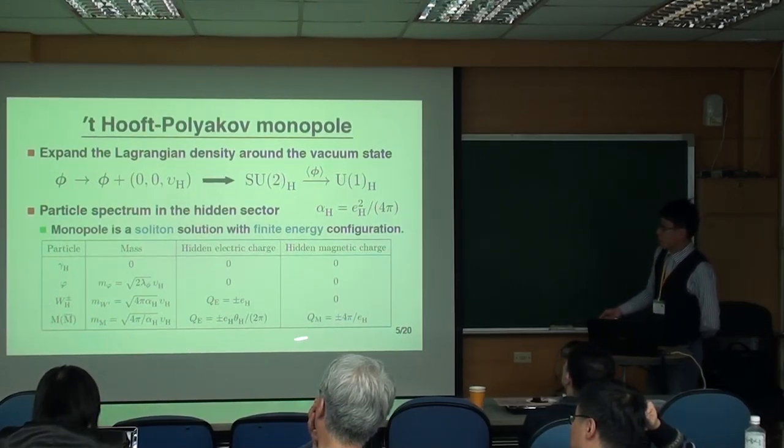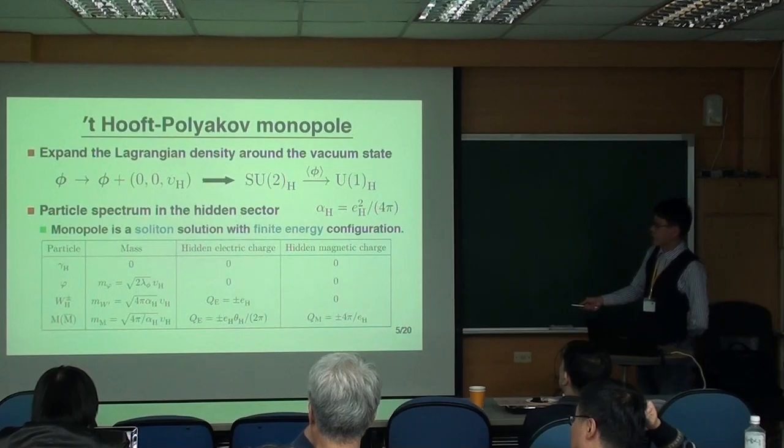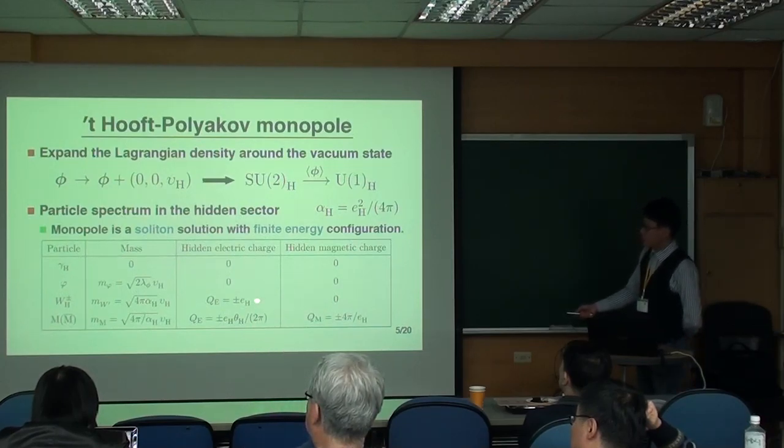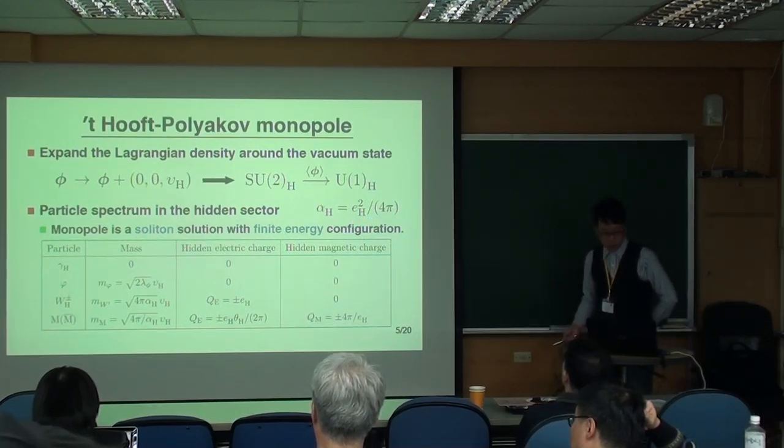And when you look at this table, you may wonder why this monopole also has electric charge. This is due to the so-called Witten effect that I introduce in the next slide. Here, this alpha_h is the hidden structure constant.